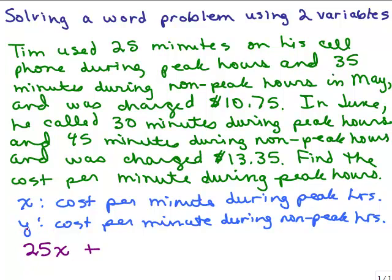Each minute costs Y cents, so he would also have to pay 35Y. And we know that total is 1075. So that's how we get the first equation. We've got the cost for the peak minutes plus the cost for the non-peak minutes and that equals 1075 cents.